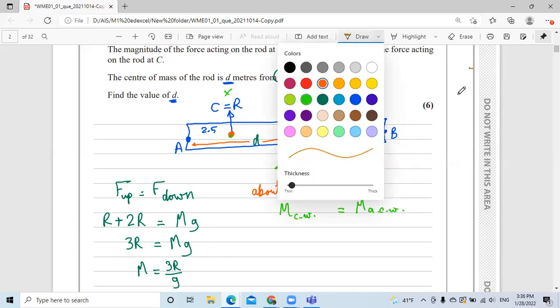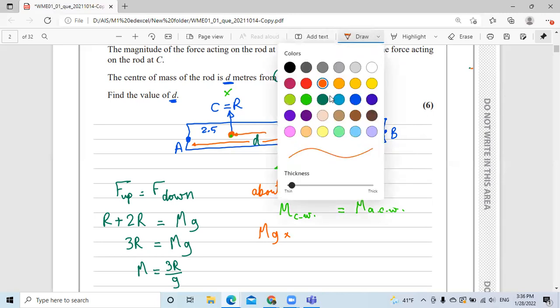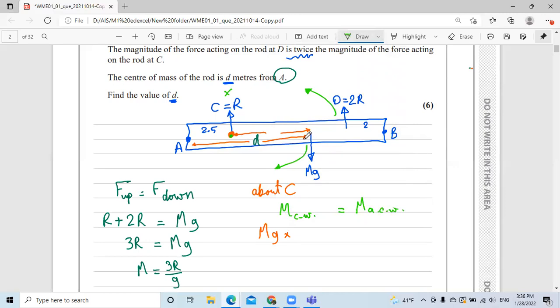So we'll say that moment clockwise is equal to moment anticlockwise. The moment clockwise, as you can see here, is only the Mg, so Mg multiplied by the distance. How far is the center of mass to point C? This distance, as you can find, is the whole distance D minus 2.5. And the whole length from D to C is 9 meters minus 2 minus 2.5, which is 4.5 meters.